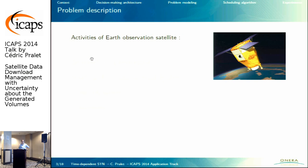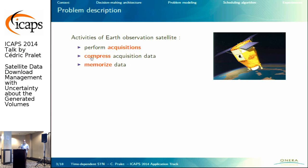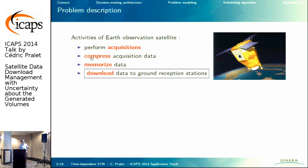In this work, we are considering the activity of Earth-observing satellites. These satellites fly around Earth at several hundreds of kilometers. Their mission is to perform acquisitions of areas on the ground, compress acquisition data on board, memorize the compressed data, and then download it to ground reception stations. We focus specifically on the data download problem for these satellites.